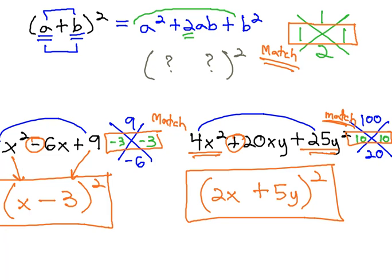As we're factoring our trinomials, once we see that matching pair of numbers, we stop everything else and factor it to a perfect square.